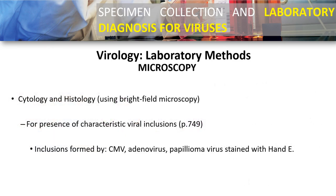For cytology and histology, we usually use a bright field microscope to observe cell characteristics. The primary requirement for virologic analysis is a good background in histology, because you need to compare normal cells with pathologic cells. For reference, you can use your textbook on page 749 for the presence of characteristic viral inclusions. Common inclusions include CMV, adenovirus, and papillomavirus, which is stained with H&E.